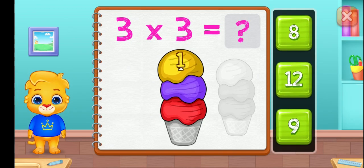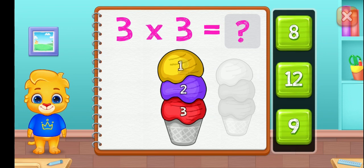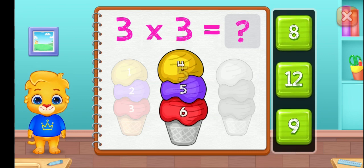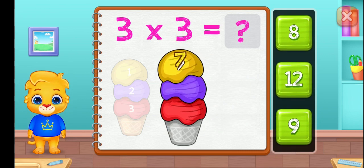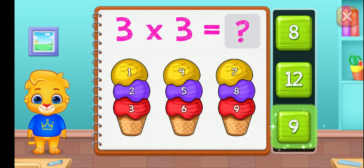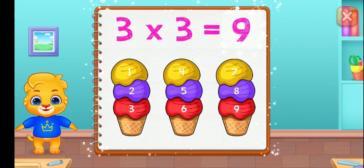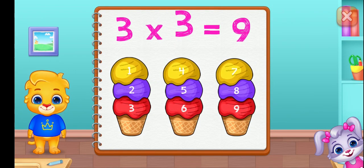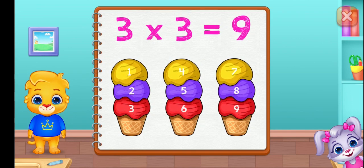One, two, three, four, five, six. One, two, three. Seven, eight, nine. Three groups of three equals nine.